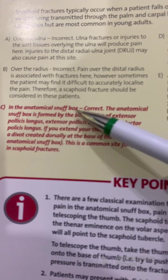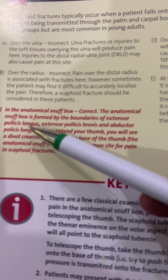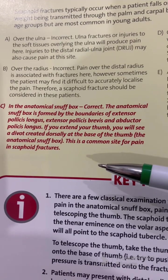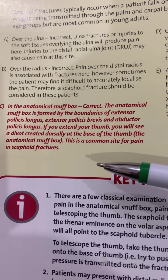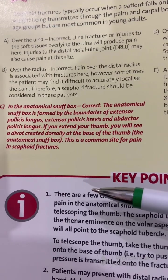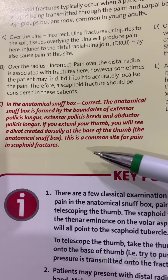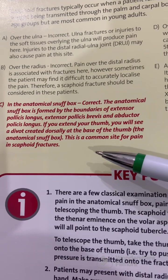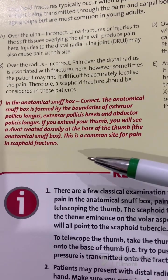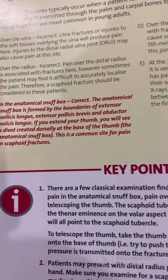The anatomical snuffbox is formed by the boundaries of extensor pollicis longus, extensor pollicis brevis, and abductor pollicis longus. If you extend your thumb, you will see a divot created dorsally at the base of the thumb, which is the anatomical snuffbox. This is the common site for pain in scaphoid fractures.